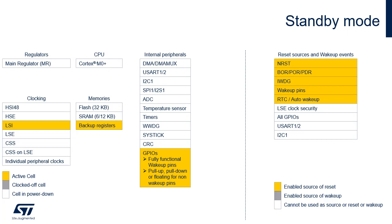In standby mode, the voltage regulator is powered down. The RTC, clocked by the internal or external low-speed oscillator, may remain active. The brown-out reset can be enabled. The independent watchdog can also be enabled in standby mode. Reset, brown-out or power-down reset, independent watchdog, and any event on the five wake-up pins can exit the microcontroller from standby mode. The consumption in standby mode without the RTC is 7.45 µA typical at 3V.